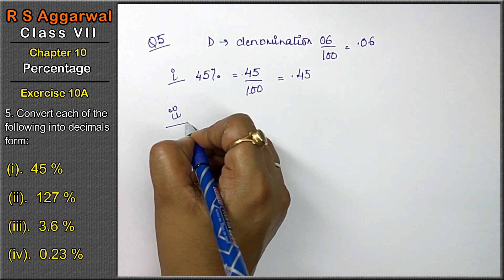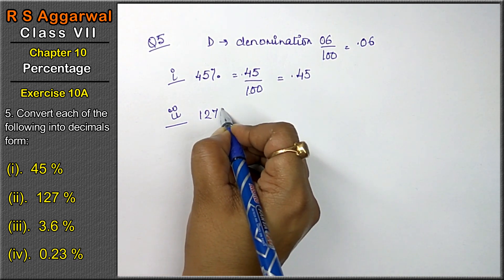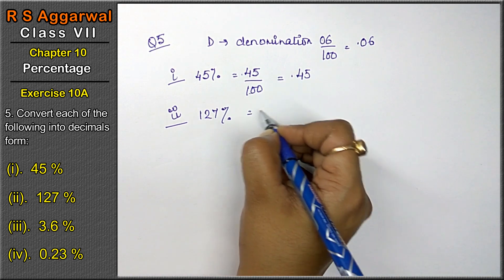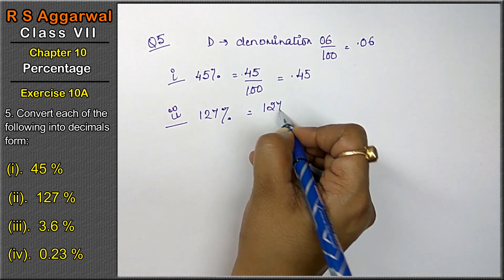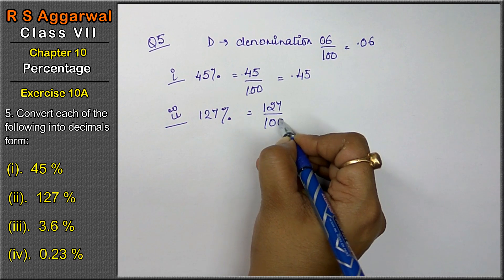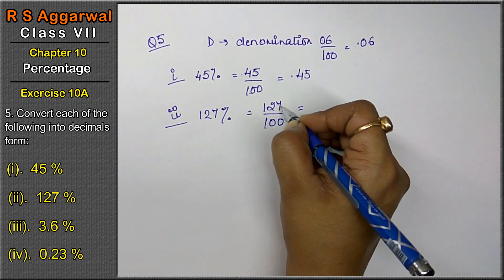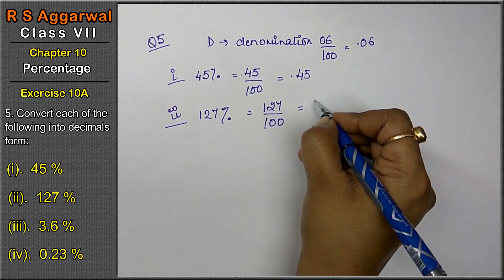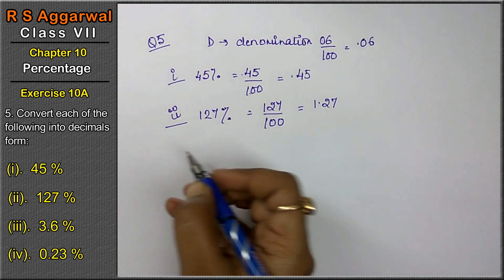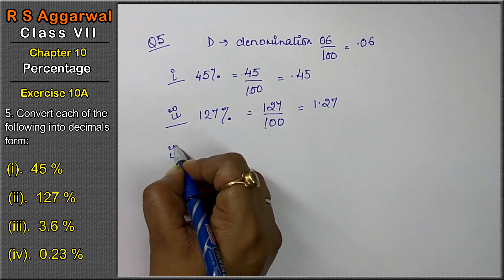Let's do second part. Second part is 127%. Now 127% can be written as 127 upon 100. To remove percentage, we divide by 100. Now 2 zeros are there, so after 2, zero will come, that means 1.27, right friends?